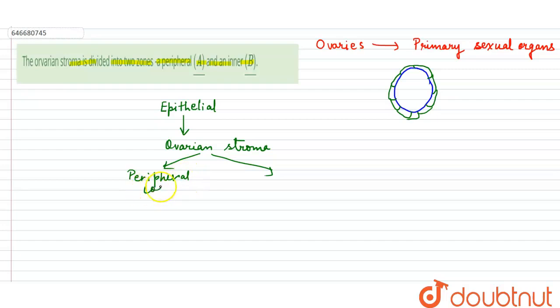And the inner, inner medulla. So this total is the ovarian stroma, ovarian stroma.